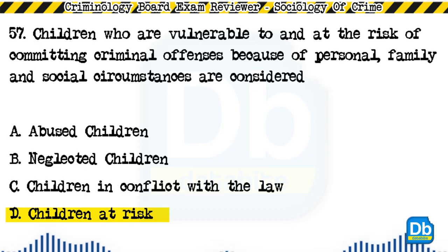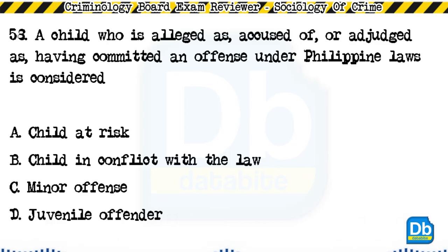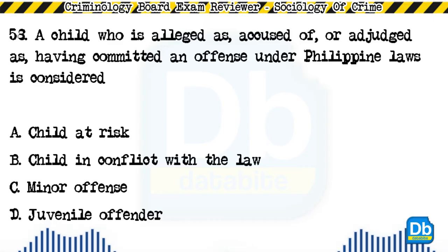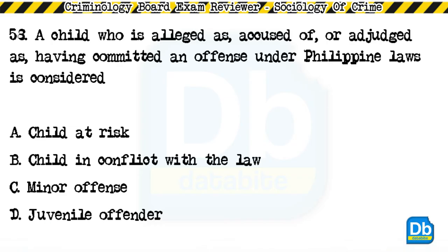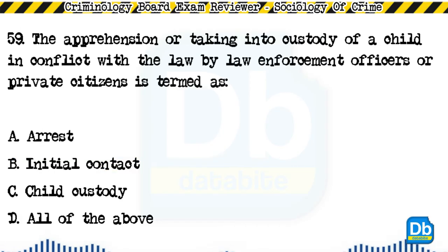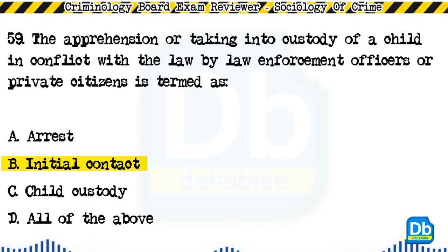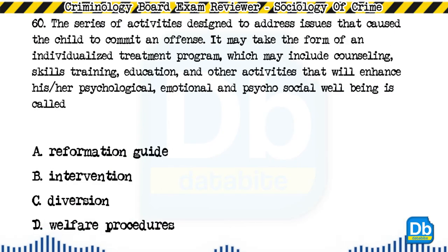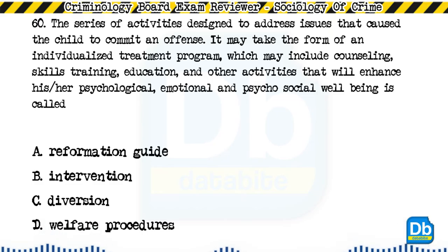The answer is D, children at risk. Question 58: A child who is alleged as, accused of, or adjudged as having committed an offense under Philippine laws is considered: a) child at risk, b) child in conflict with the law, c) minor offense, d) juvenile offender. The answer is B, child in conflict with the law. Question 59: The apprehension or taking into custody of a child in conflict with the law by law enforcement officers or private citizens is termed as: a) arrest, b) initial contact, c) child custody, d) all of the above. The answer is B, initial contact. Question 60: The series of activities designed to address issues that cause the child to commit an offense — it may take the form of an individualized treatment program including counseling, skills training, education, and other activities that will enhance psychological, emotional, and psychosocial well-being: a) reformation guide, b) intervention, c) diversion, d) welfare procedures.